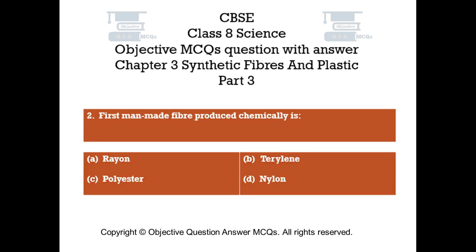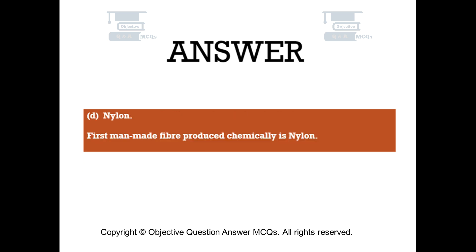Question number two. The first man-made fiber produced chemically is: Option A: rayon. Option B: terrylene. Option C: polyester. Option D: nylon. The right answer is option D — nylon. The first man-made fiber produced chemically is nylon.